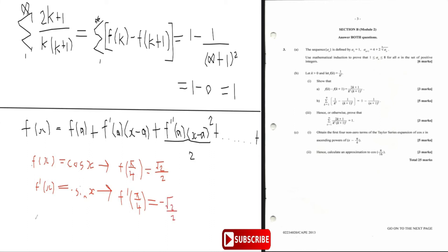We differentiate again to get f double prime of x. When you differentiate minus sine you get minus cos x. So f double prime of pi by four equals minus cos of pi by four, which is minus root two over two.